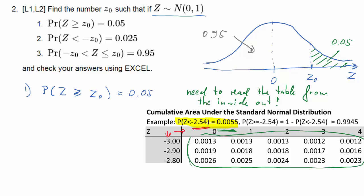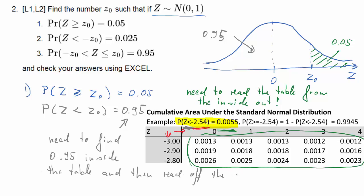So we should note that this area is 0.95 and that's the probability that Z is smaller than z0. And that's the sort of probabilities we can read off the table. So we always want to work with problems of the smaller than type. So the probability that Z is smaller than z0 is 0.95. That's the same z0 as we are looking for. So we need to find 0.95 inside the table and then read off the Z value.